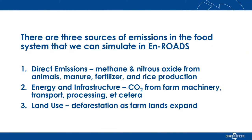There are three sources of emissions in the food system that we can simulate in En-ROADS. First, there are direct emissions — that is, methane and nitrous oxide from animals and manure, fertilizer, and rice production.